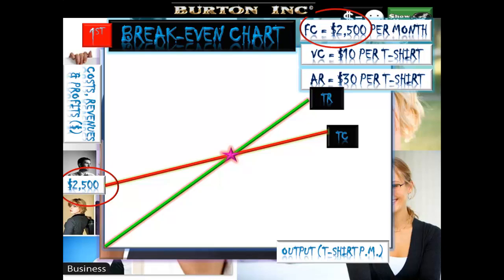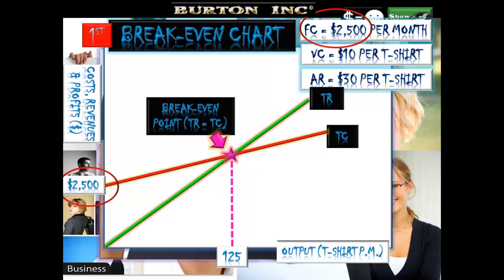Where total revenue equals total cost, we have our breakeven point — our breakeven quantity of output. In this case, we dot the line down and find that is 125 t-shirts to break even. Total fixed costs are drawn as a flat horizontal line at $2,500, right across whatever quantity we're producing — they don't change no matter how many t-shirts we produce.